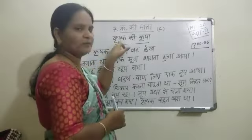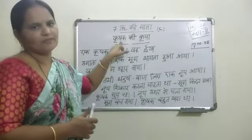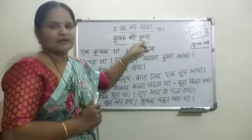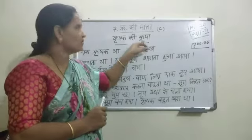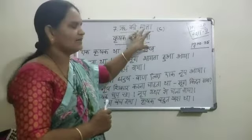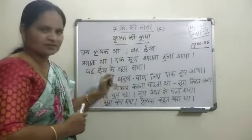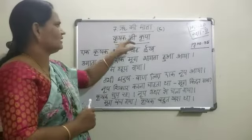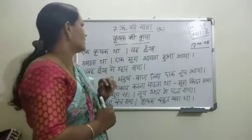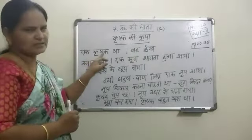What is the poem meaning? Poem name: Krushakki Krupa. Krushakki means what? Farmer. Krupa means Daya — grace or kindness. Krushakki Krupa means Farmer's Grace. There was one farmer — Eek krushetta.